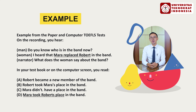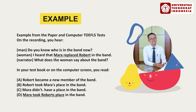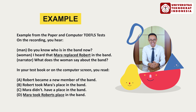In your test book you read: A — Robert became a new member of the band; B — Robert took Mara's place in the band; C — Mara didn't have a place in the band; D — Mara took Robert's place in the band.